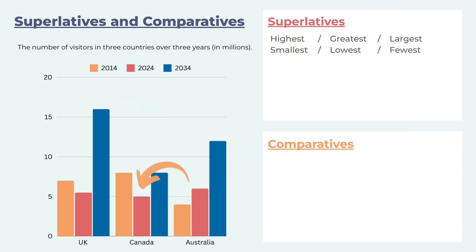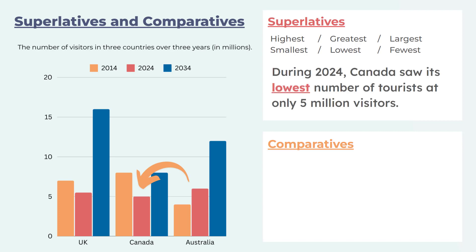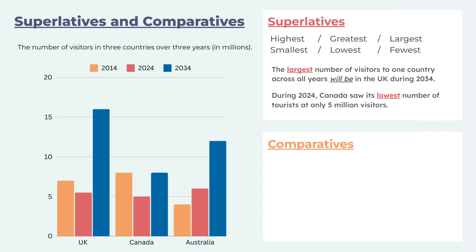Let's look at a different data point: Canada in 2024. 'During 2024, Canada saw its lowest number of tourists at only 5 million visitors.' Again, I'm making a natural comparison across the three years within just Canada, and I'm also giving the specific figure of 5 million visitors — adding more detail to the sentence. Quite descriptive and quite effective. There we have two structures using superlatives.